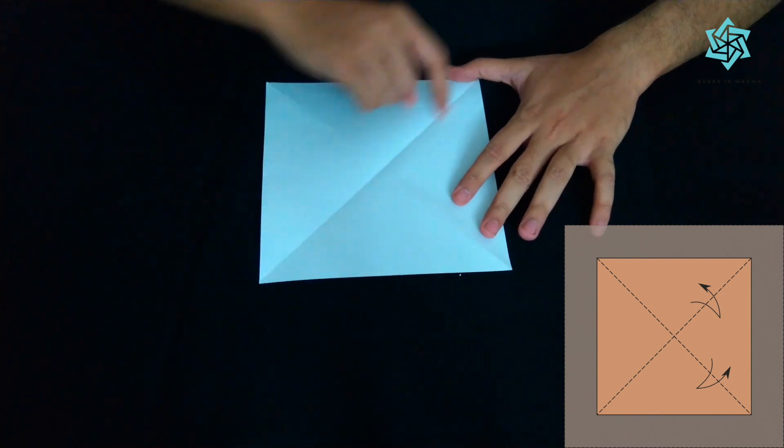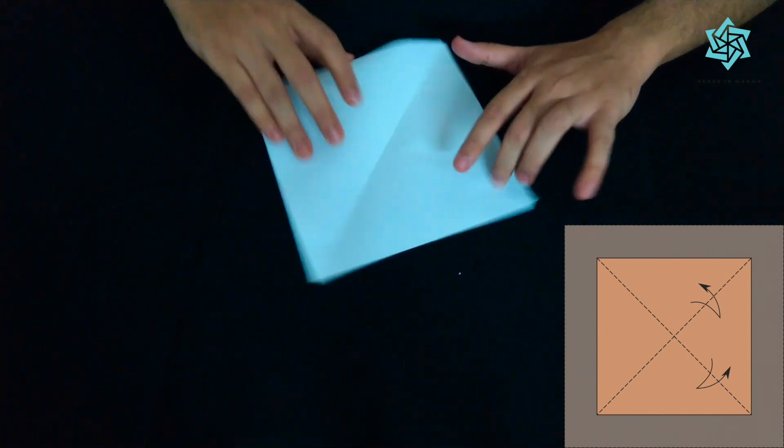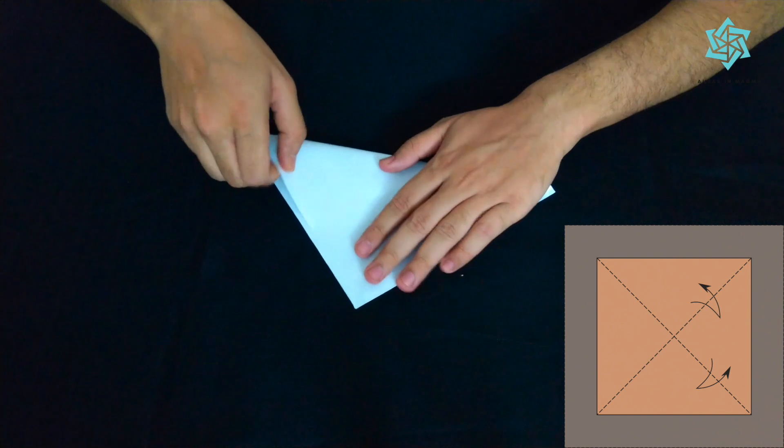So we have gotten a diagonal crease like this. Similarly we want a diagonal crease like this so we'll do it in the other direction as well.